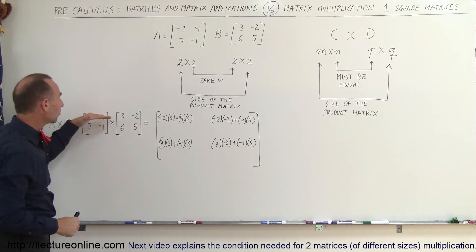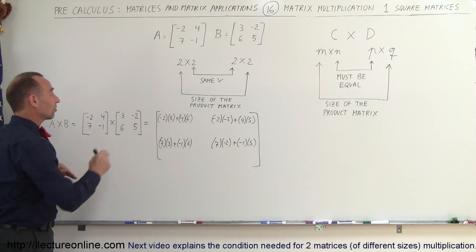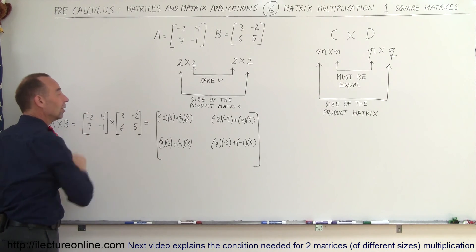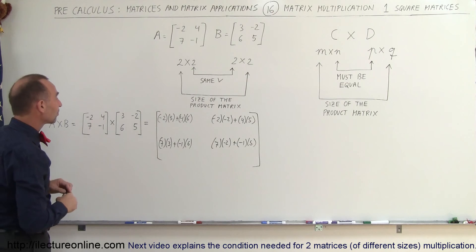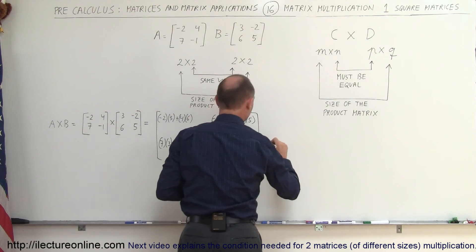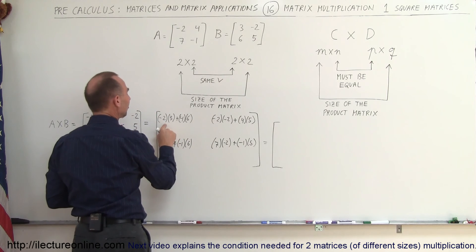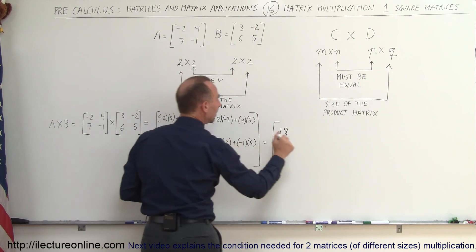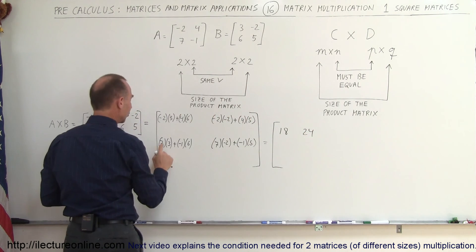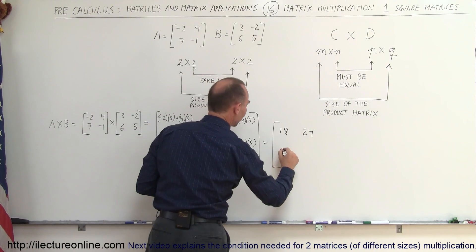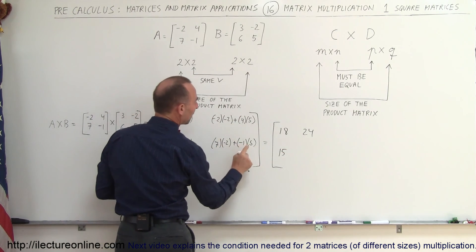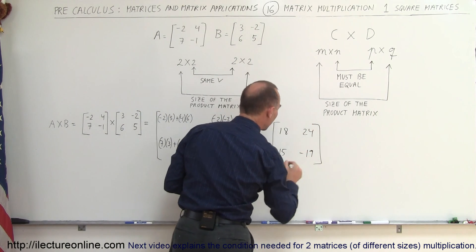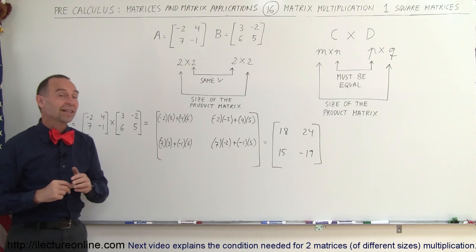In each case, you go across on the first matrix and down on the second matrix — the row of the first matrix times the column of the second matrix. Simplifying: negative 6 plus 24 gives positive 18; positive 4 plus positive 20 gives positive 24; 21 minus 6 gives positive 15; and negative 14 minus 5 gives negative 19. And there is the product of those two matrices — that's how it's done.